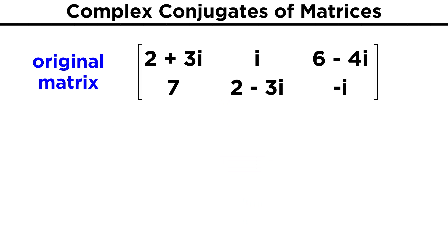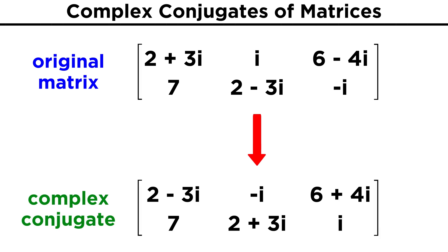So with our previous example — two plus three I, I, six minus four I, seven, two minus three I, negative I — the conjugate will be two minus three I, negative I, six plus four I, seven, two plus three I, I. So this is certainly simple enough.